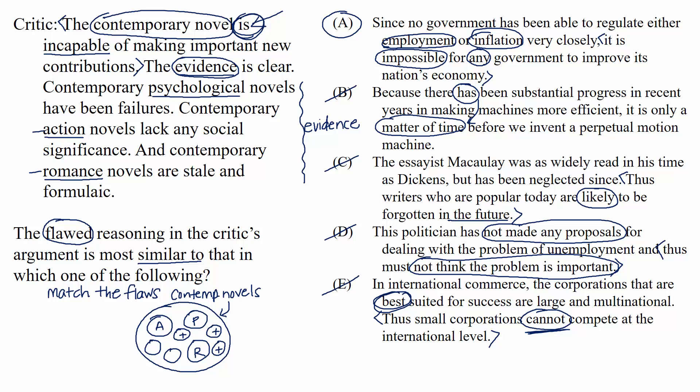So to recap: even though the topics in the answer choices will usually be different from the topic in a match-the-flaw passage, it doesn't matter. Your job is to find the argument that reasons in a flawed way similar to how the passage reasons. A good way to do that is to break down the argument into its conclusion and support, find why it isn't sound, and keep a strong description of that flaw in mind so you don't get distracted by the other flawed arguments in the wrong choices.